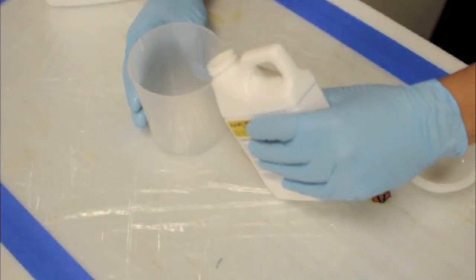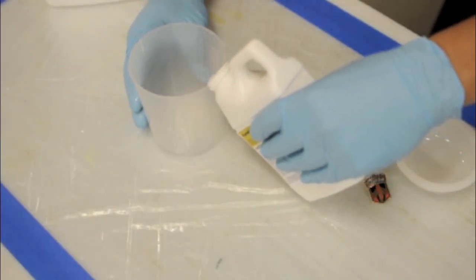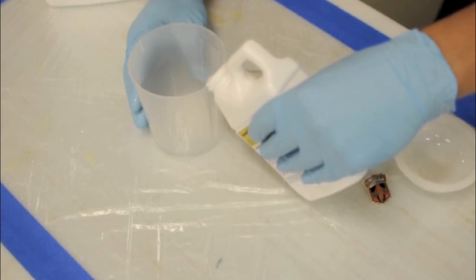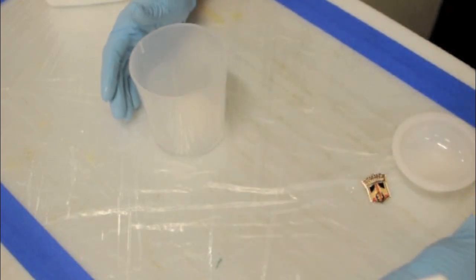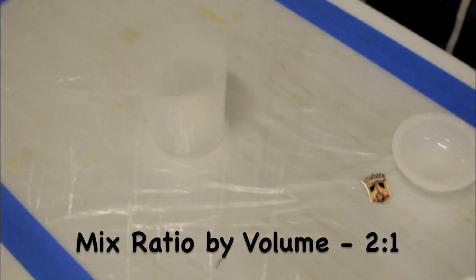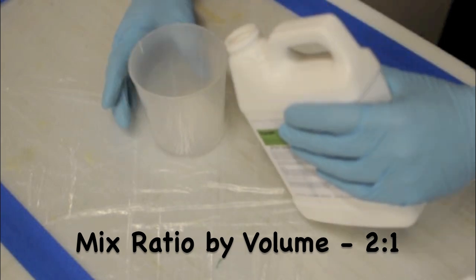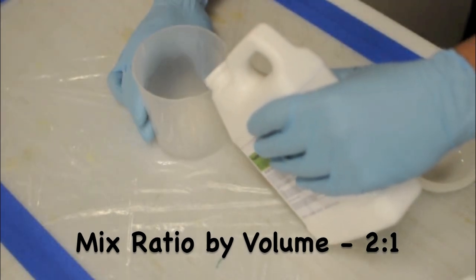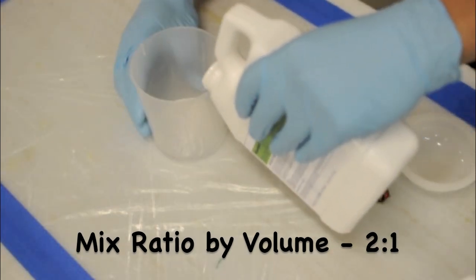First, we're going to start by measuring out and mixing our epoxies. All of our epoxies are two-part resins, which means an epoxy part and a hardener part must be mixed at the proper ratio. When doing small batches, it is often easier to measure by volume, and for ease of use, all of our retail systems are a 2 to 1 mix ratio by volume.